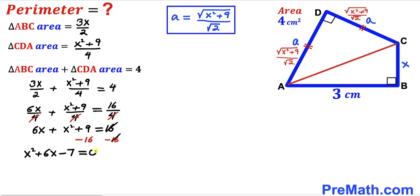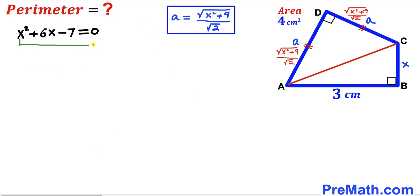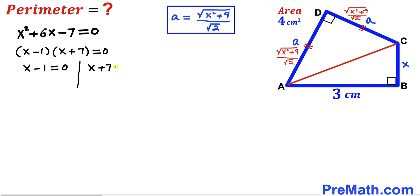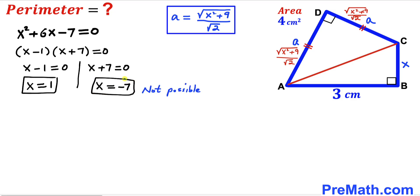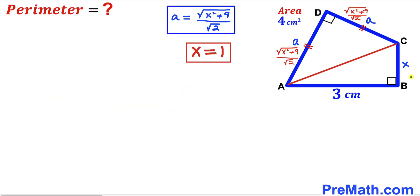We solve the quadratic equation x² + 6x − 7 = 0 by factoring: (x − 1)(x + 7) = 0. This gives x = 1 or x = −7. Since x represents a side length, the negative value is not possible and we reject x = −7, accepting x = 1.